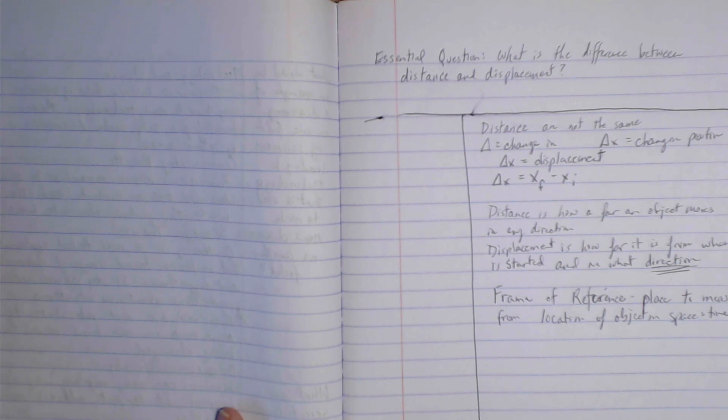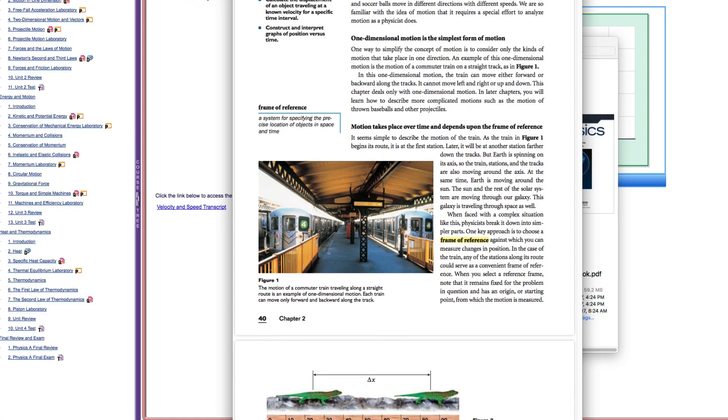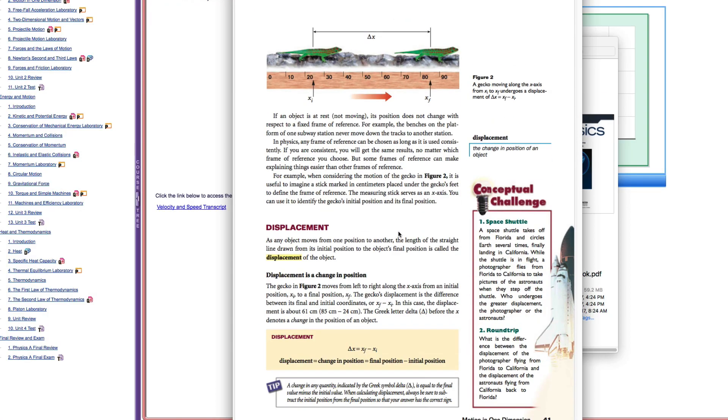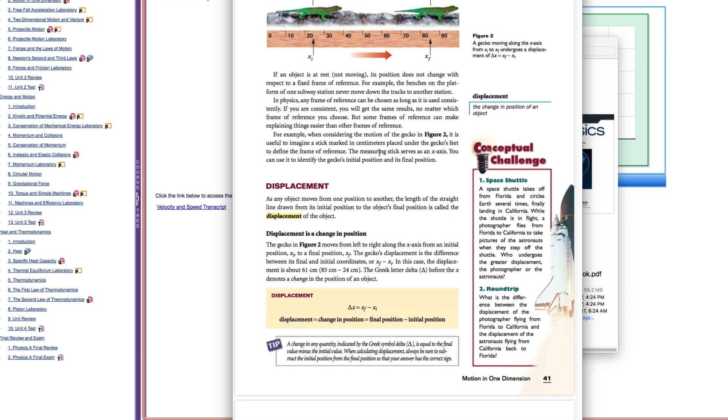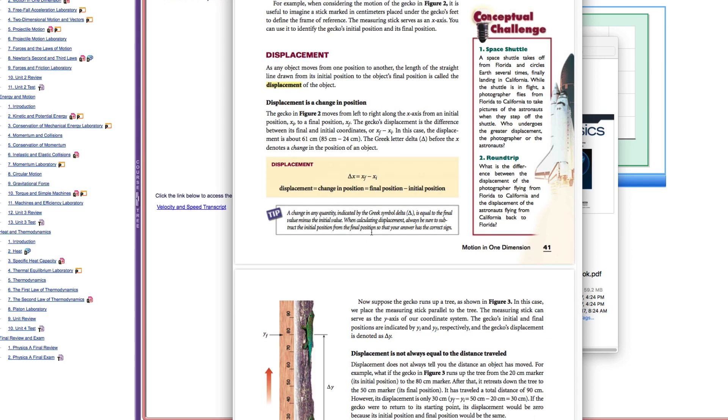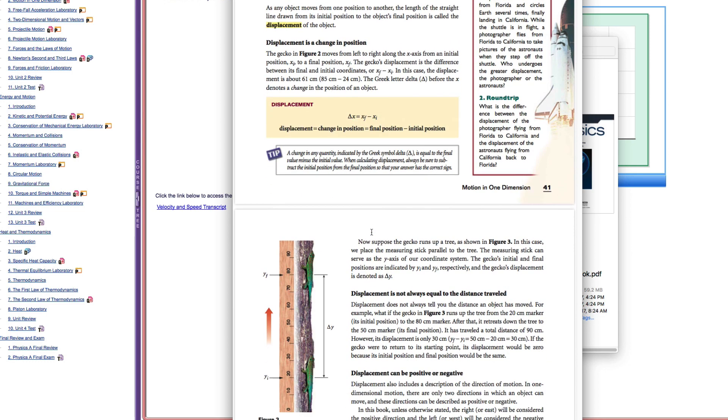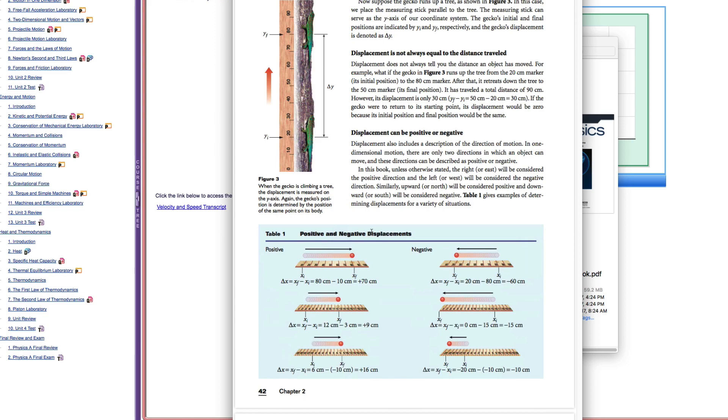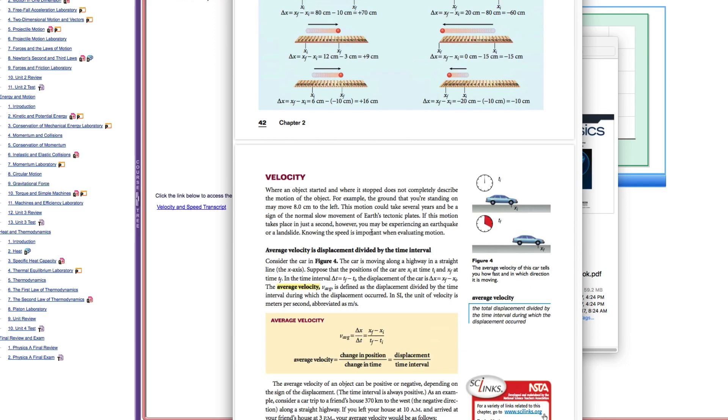Then they give me some images of a little lizard moving on a timeline. Again, I see my delta x. I now know that that means displacement. And there's my formula. Displacement is change in position equals final position minus initial position. So it looks like I've pretty much got this one taken care of.